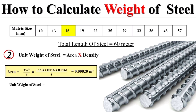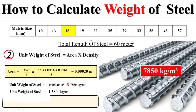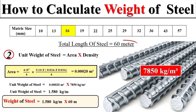Now we can calculate the unit weight of the 16 mm diameter by multiplying the total cross-sectional area by the density of steel, giving us the unit weight. Then, multiplying this unit weight by the total length of 60 meters — with the meter units cancelling — we get the total weight of the 16 mm diameter bar with a total length of 60 meters.